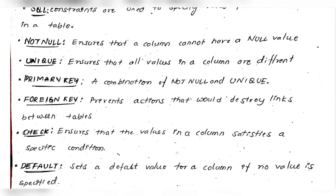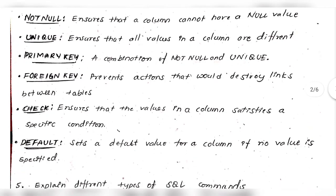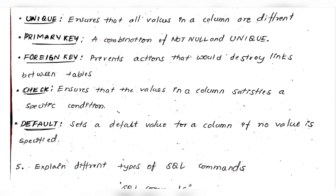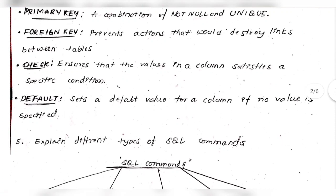NOT NULL ensures that a column cannot have a null value. UNIQUE ensures all values in a column are different. PRIMARY KEY is a combination of NOT NULL and UNIQUE. FOREIGN KEY maintains referential integrity and prevents actions that would destroy links between tables. CHECK ensures values in a column satisfy specific conditions. DEFAULT sets a default value for a column when no value is specified.